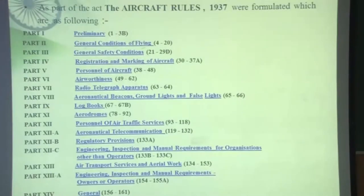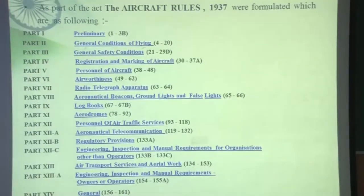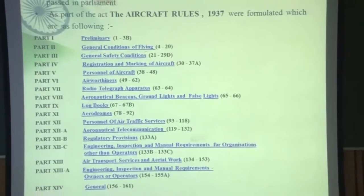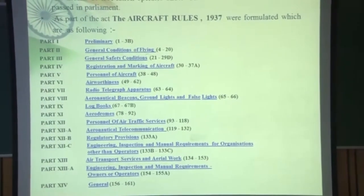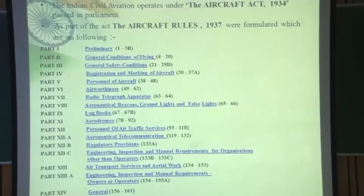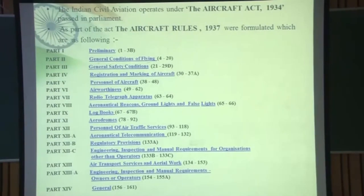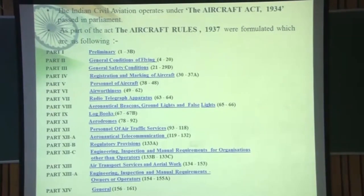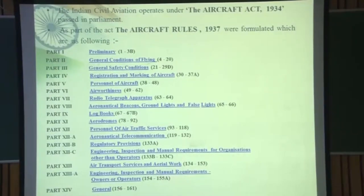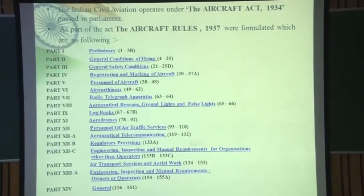The Indian Civil Aviation operates under the Aircraft Act 1934, which was passed in Parliament. As part of that act, the Aircraft Rules 1937 were formulated. The Indian Aircraft Rules 1937 is divided into various parts.